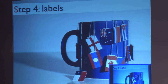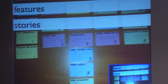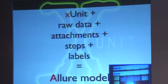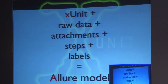The last part of the data model is labels. It's like an agile board with features and stories on it. We added features and stories to this framework so you can annotate your tests and then track how they cover your business requirements. To summarize: we start with the standard X-unit format, add raw data during execution, add attachments, introduce steps, add labels — and now you have the Allure model.